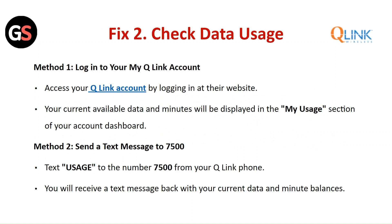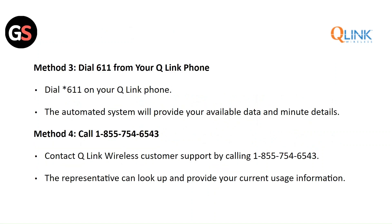You will receive a text message back with your current data and minute balances. Method three — dial *611 from your Qlink phone. The automated system will provide your available data and minute details. Method four — you can also contact Qlink Wireless customer support by calling; the representative can look up and provide your current usage information.